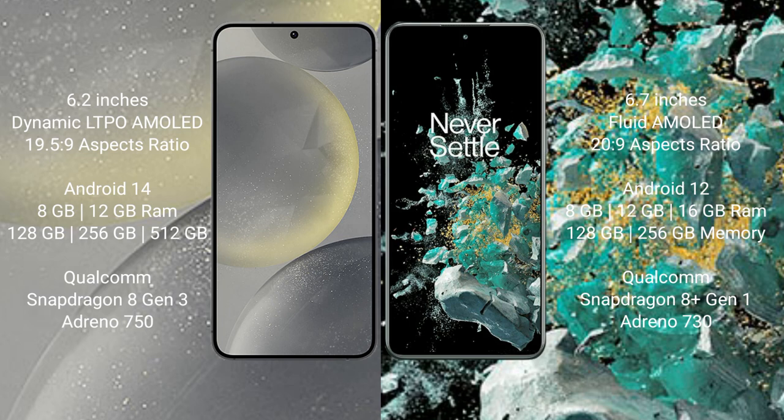Samsung Galaxy S24 comes with 8GB or 12GB RAM, 128GB or 256GB internal storage, and a Qualcomm Snapdragon 8 Gen 3 processor with Adreno 750 GPU.